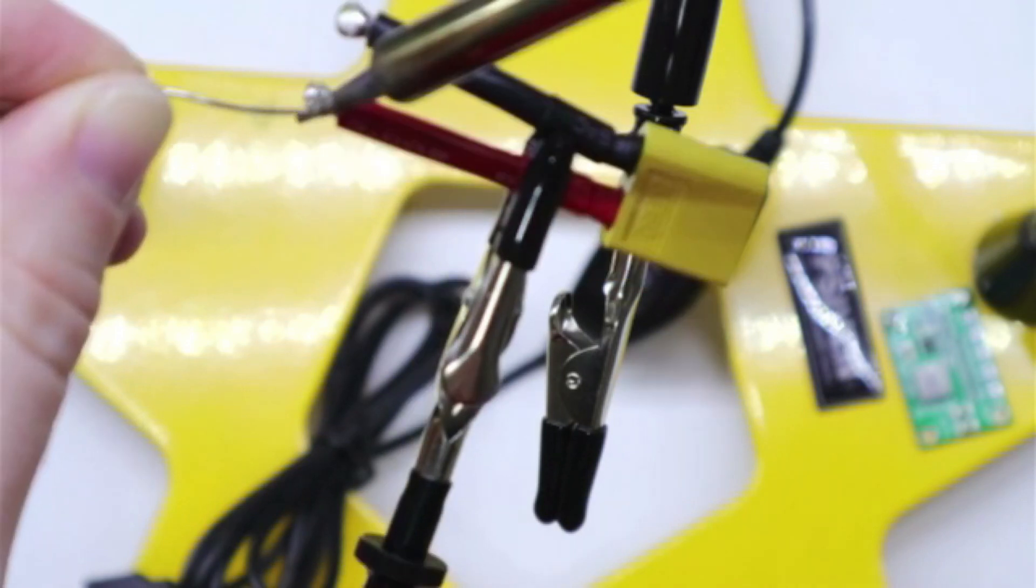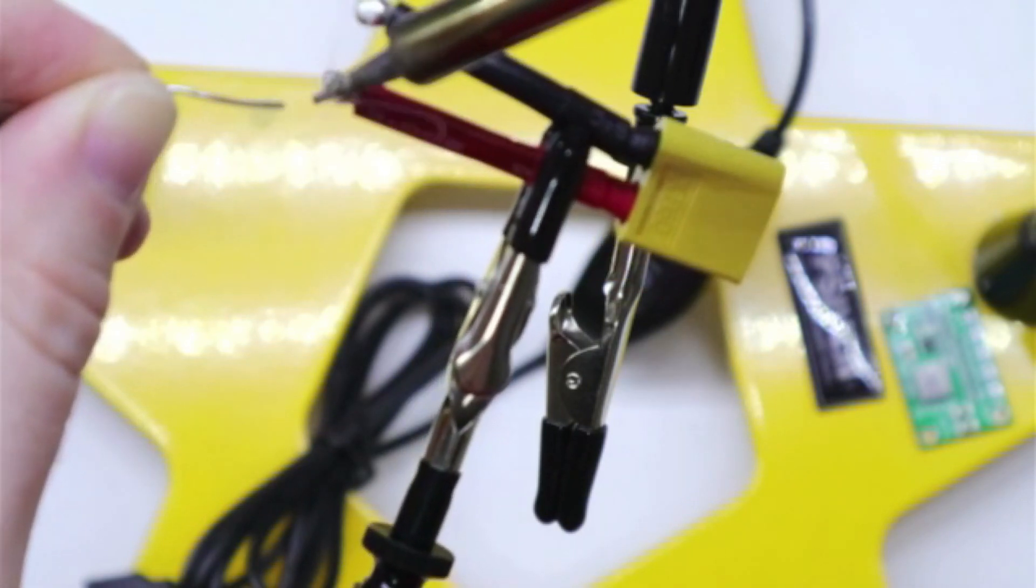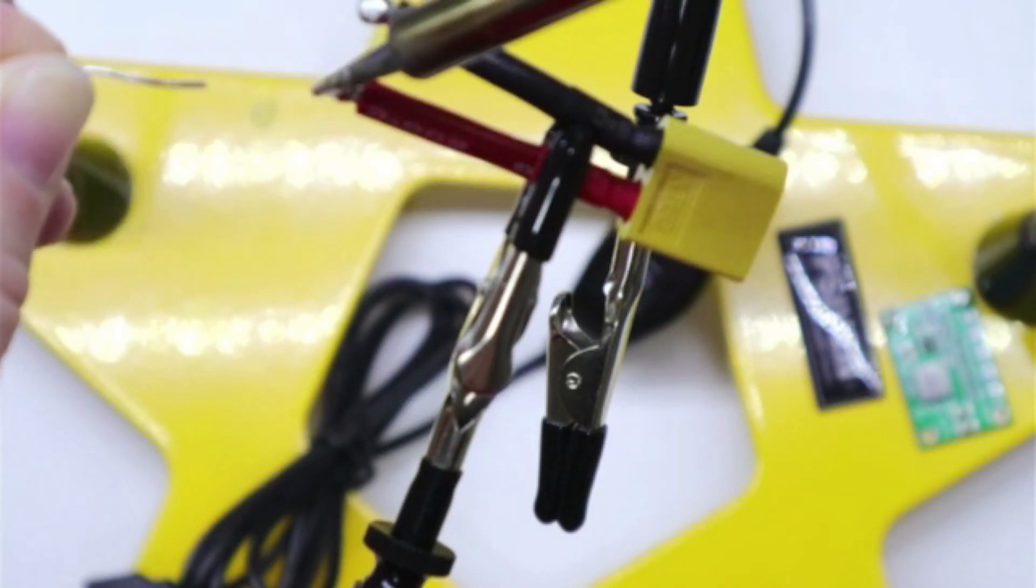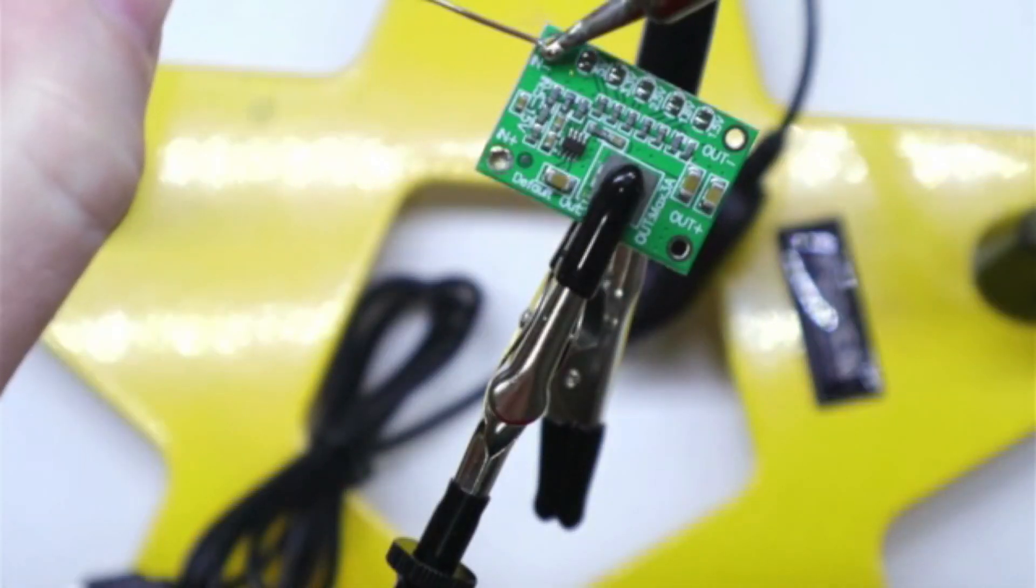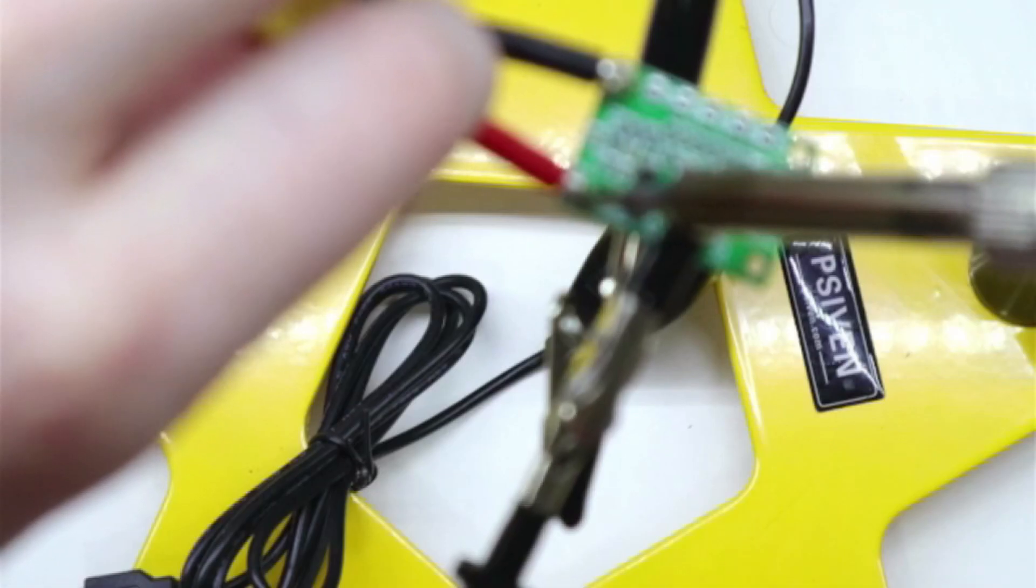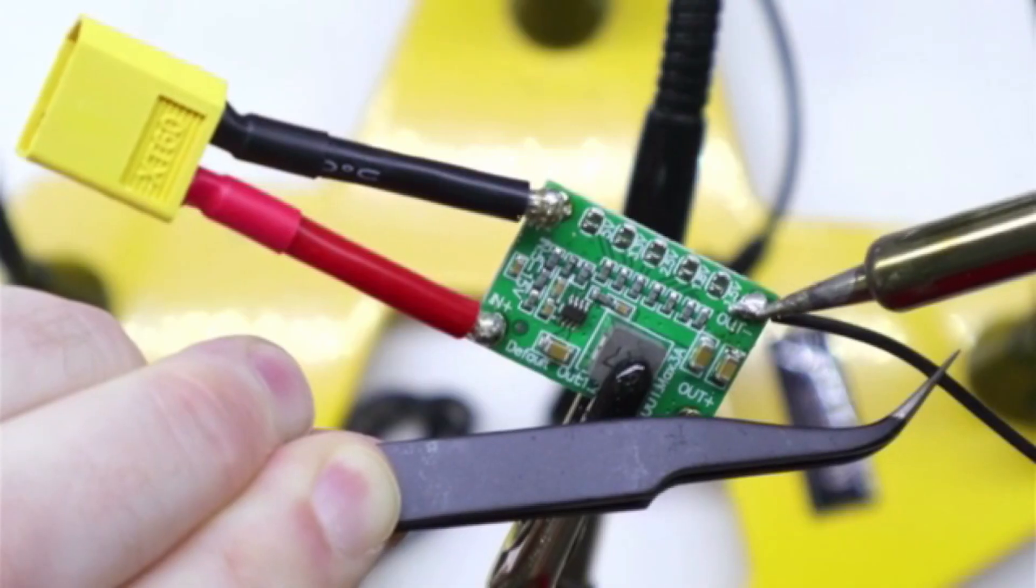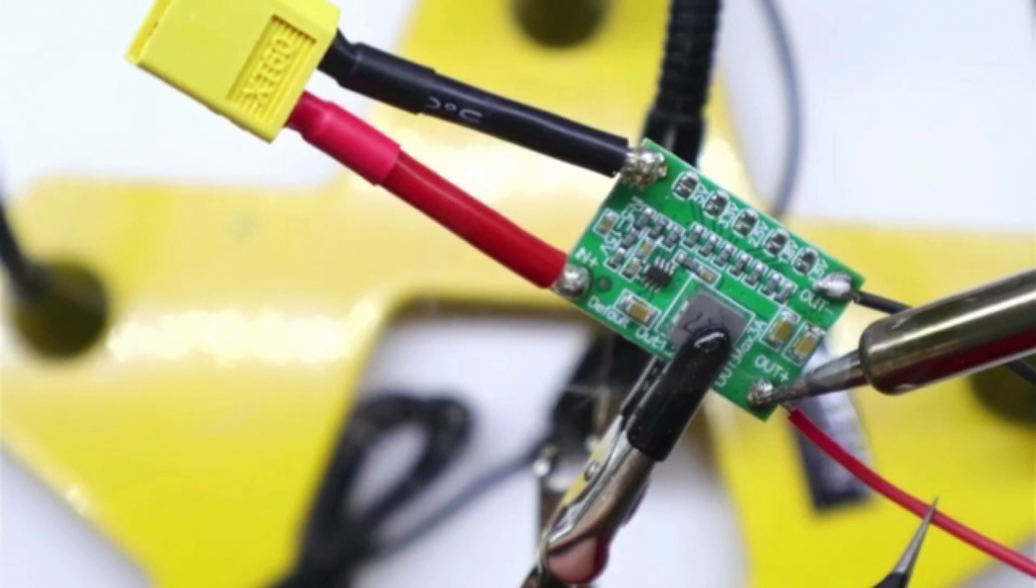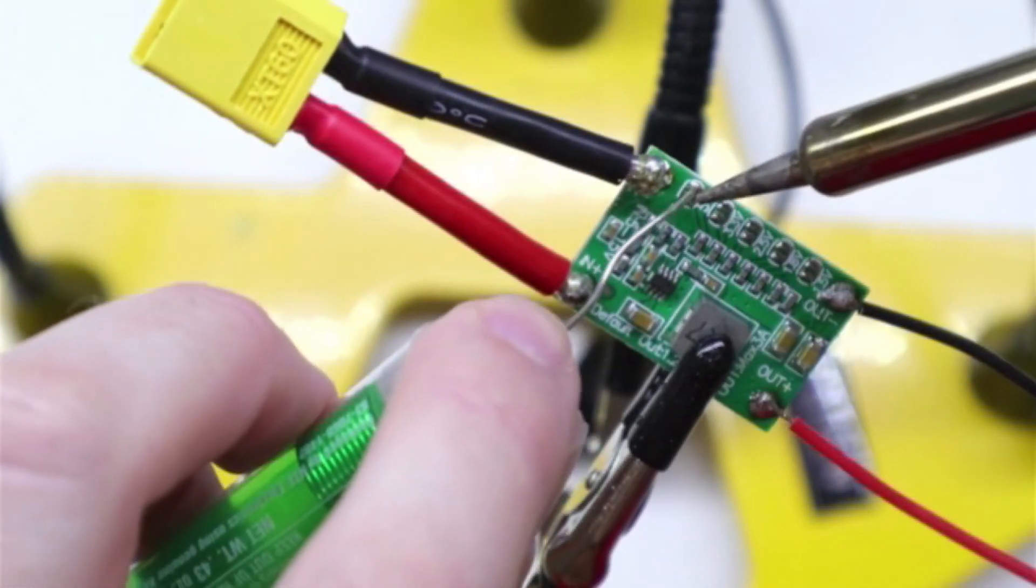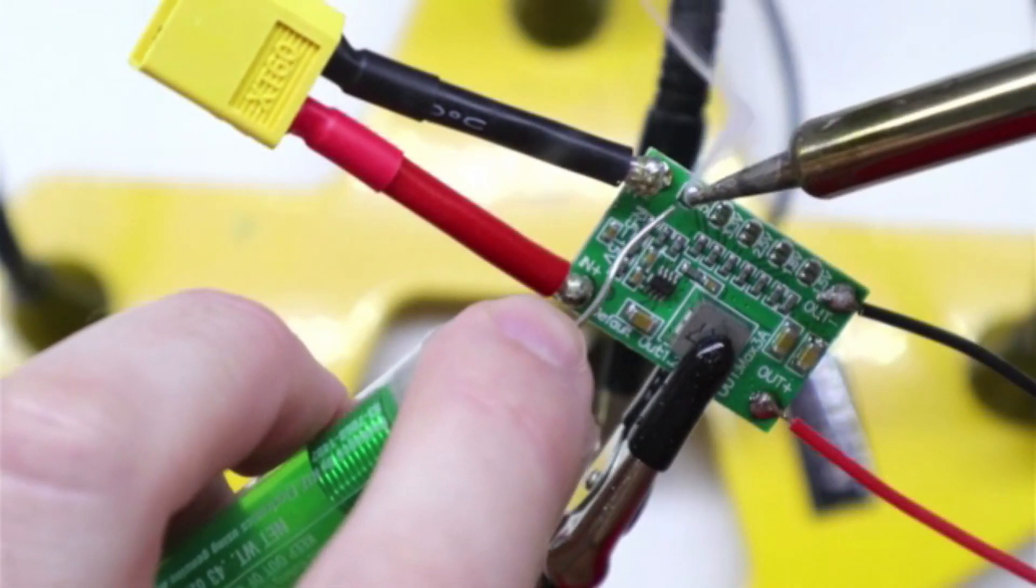To prepare the new buck converter, I first have to solder on some wires. I start by tinning the battery terminal wires. With a little extra solder, I can attach them to the board. I can then do the same thing for the output wires. And finally, I need to solder the 5 volt selector so that it outputs 5 volts.